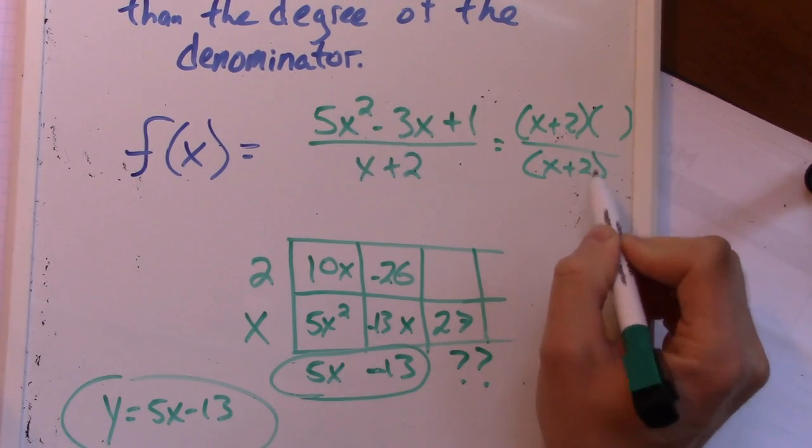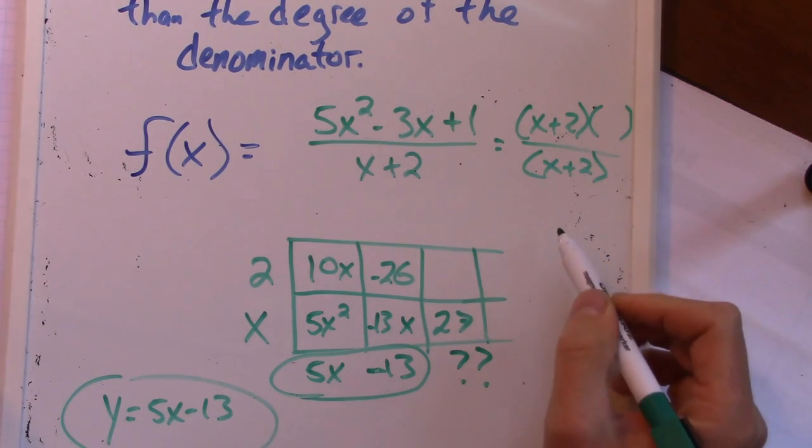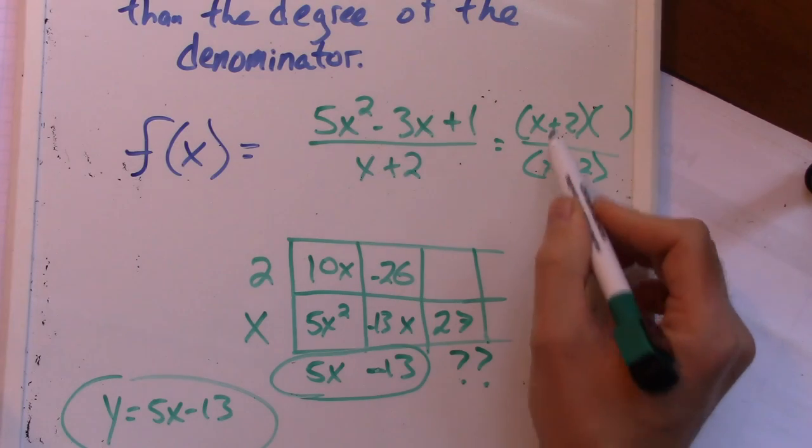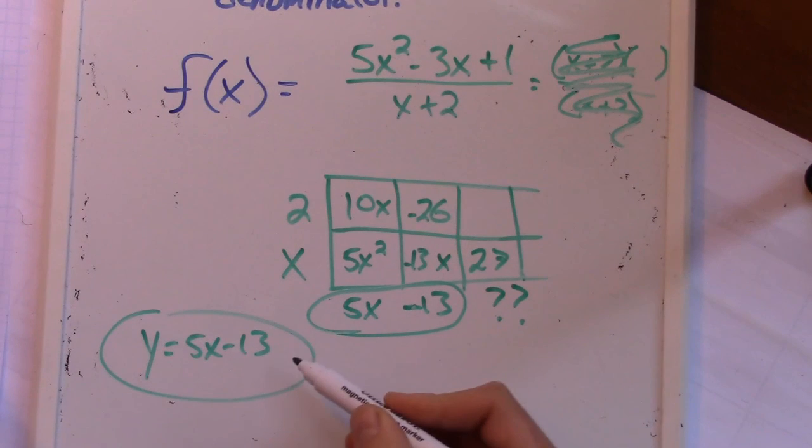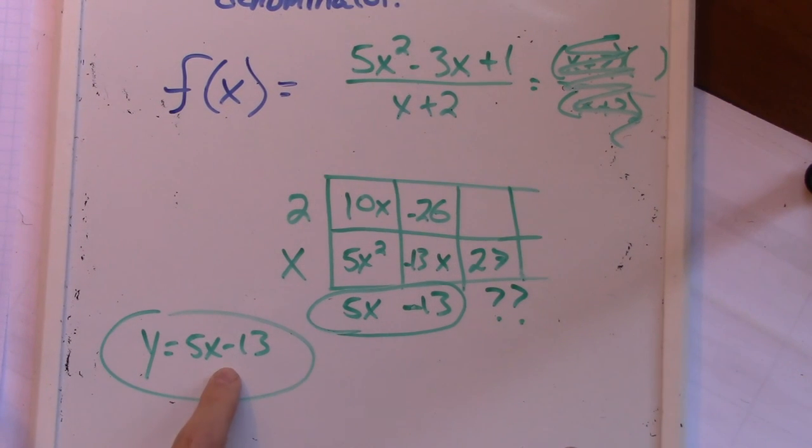And we would have ended up canceling it out somehow with the qualification that x can equal negative 2. Right? So if that were true, but that is not true, because it doesn't divide evenly. So we're left with this piece that is going to be our oblique asymptote. Good luck.